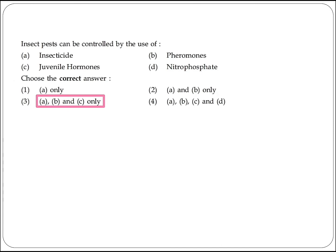The next question asks how insect pests can be controlled. They can be controlled by use of insecticides and pheromone hormones. Option 3 (A, B, and C only) is the right answer.